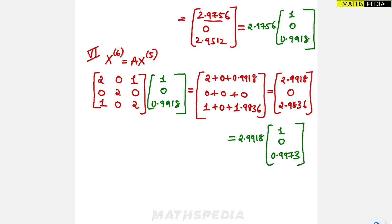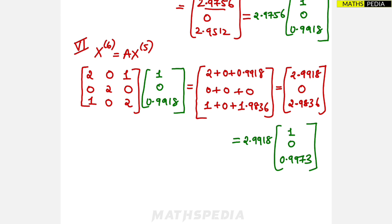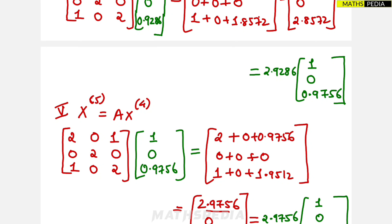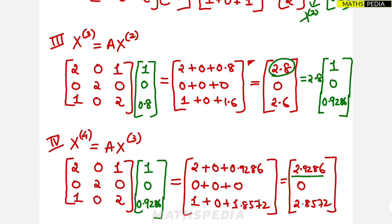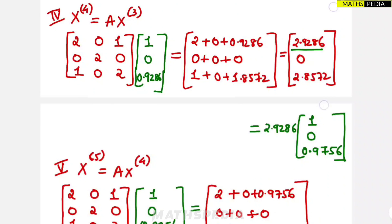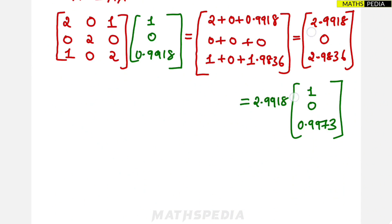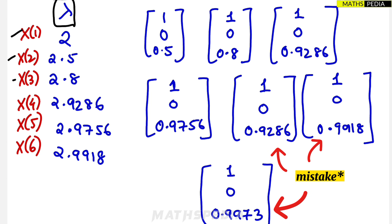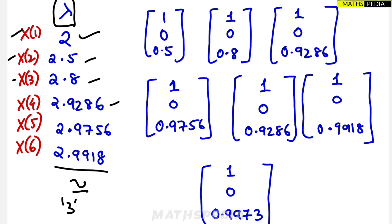The question is when to stop this procedure. Sometimes they specify stopping after 3 or 4 iterations. If you keep iterating, the λ value will eventually be the same in consecutive iterations — that means it has converged. Looking at the λ values: 2, 2.5, 2.8, 2.9286, 2.9756, 2.9918 — they keep increasing and are approaching approximately 3.